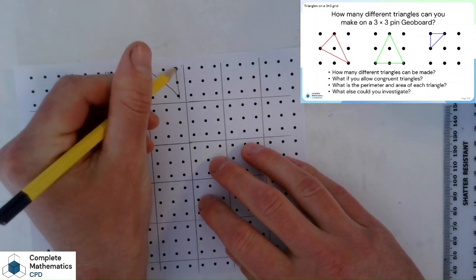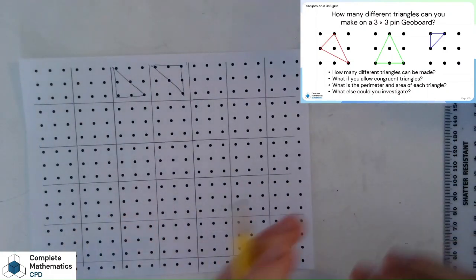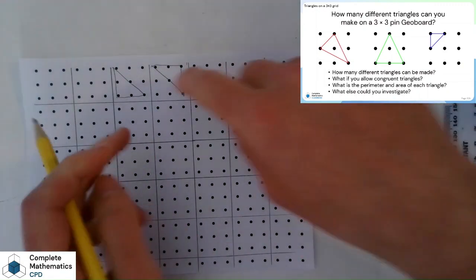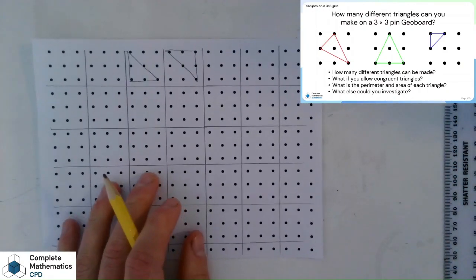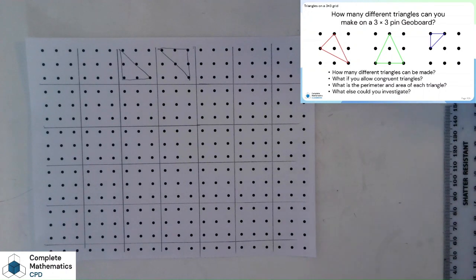And this triangle here, we mention that they're congruent, they're the same triangle if you was to rotate this one round. So all these natural discussions happen, which is really nice in the classroom.